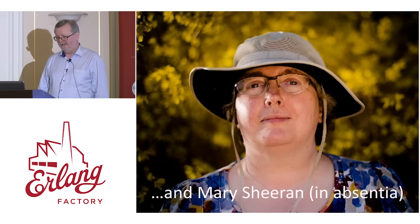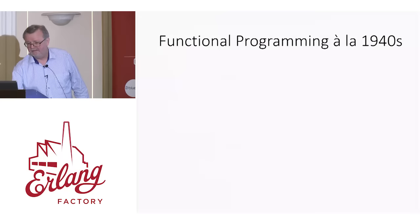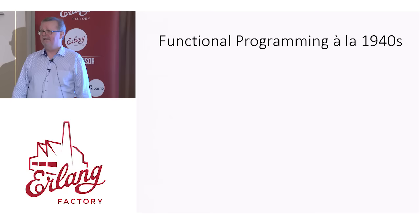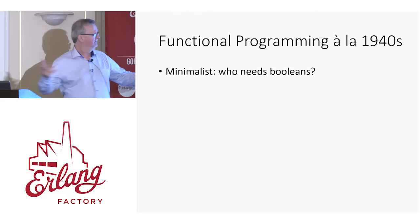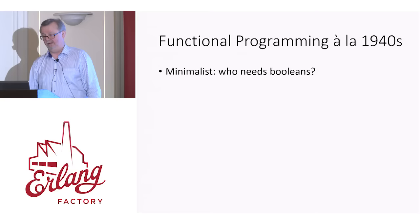My paper 25 years ago was not the start of the subject — not at all. Functional programming dates back to the 1940s. But back then, it was rather different. Back then, functional programming was very minimalist. For example, Booleans — who needs them? What can you do with a Boolean? All you can do really is make a choice. Well, we can define functions to do that. So let's define true and false to be functions that make choices.